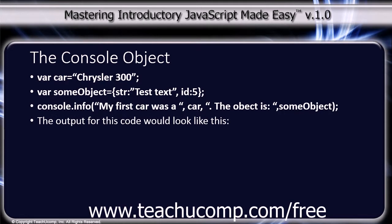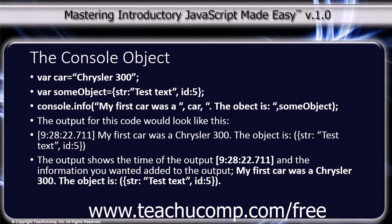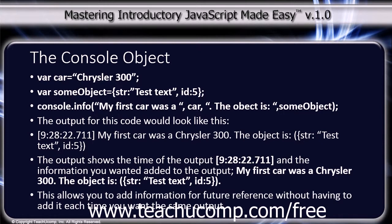The output for this code would look like this. My first car was a Chrysler 300. The object is: string colon "test text", id colon 5. The output shows the time of the output and the information you wanted added — my first car was a Chrysler 300, and the object is string "test text" with an id of 5. This allows you to add information for future reference without having to add it each time you want the same output.